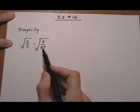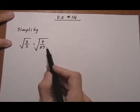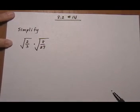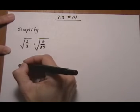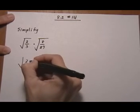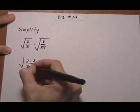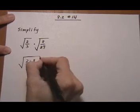This would be kind of a mess to try to simplify, you know, just the 27 or just the 8. So, let's go ahead and just combine everything and see what we've got going here. So, let's do root 2 times 8 over 3 times 27.